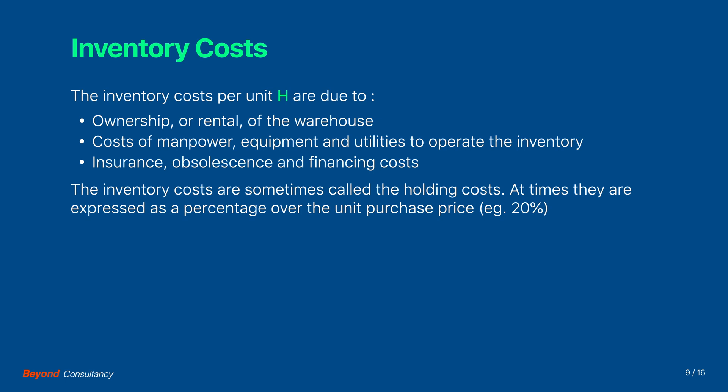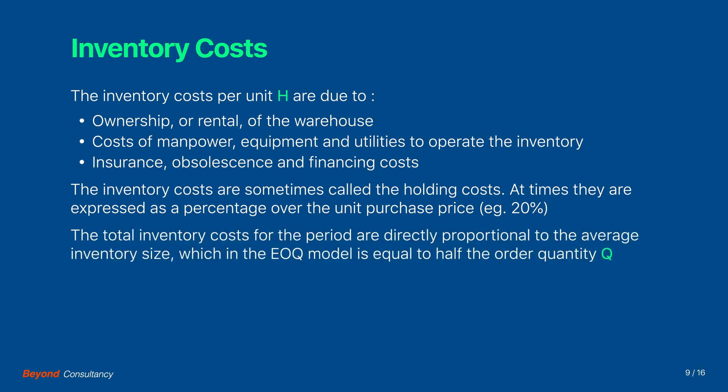At times they are expressed as a percentage over the unit purchase price, for instance 20%. The total inventory costs for the period are directly proportional to the average inventory size, which is equal to half the order quantity Q. So we come to this formula for the total inventory costs for the period.